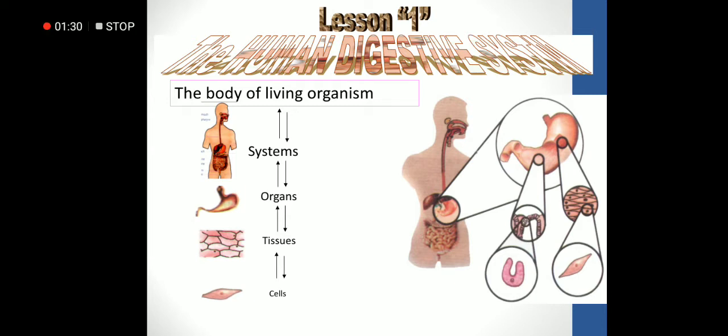As we see in the picture on the right side, a tissue consists of some cells. A group of cells make a tissue, a group of tissues make an organ, a group of organs make a system, and a group of systems make a body. So the smallest building unit of the human body is the cell.